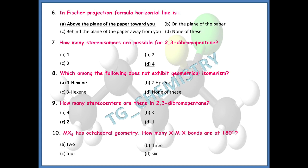So option C is the right answer — two stereocenters in 2,3-dibromopentane give four stereoisomers. The tenth question: for MX6, the geometry is octahedral. How many X-M-X bonds are there at 180° in MX6 compounds? You have to consider the square plane and also the ligands above and below. The right answer is three — three X-M-X bonds are at 180°.